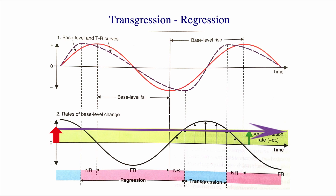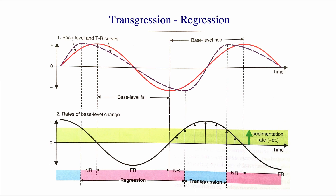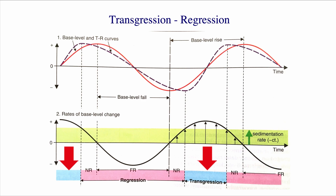The rates of base level change, however, are actually changing. When those rates are above zero, you are creating space — accommodation for the sediments. When they are below zero, you are effectively eroding and removing space. Now, if the rate of accommodation creation — the rate of base level change — is above the rate of sedimentation, you have a transgression. That's the blue area. It means you're creating more space than you can fill with sediment, so by definition the shoreline moves back onto the continent.